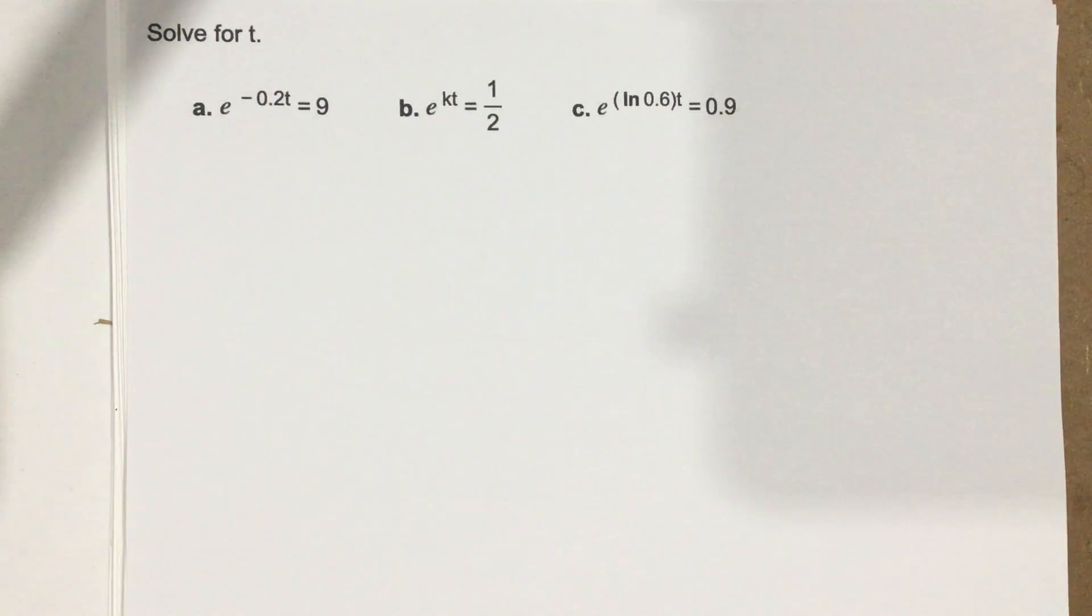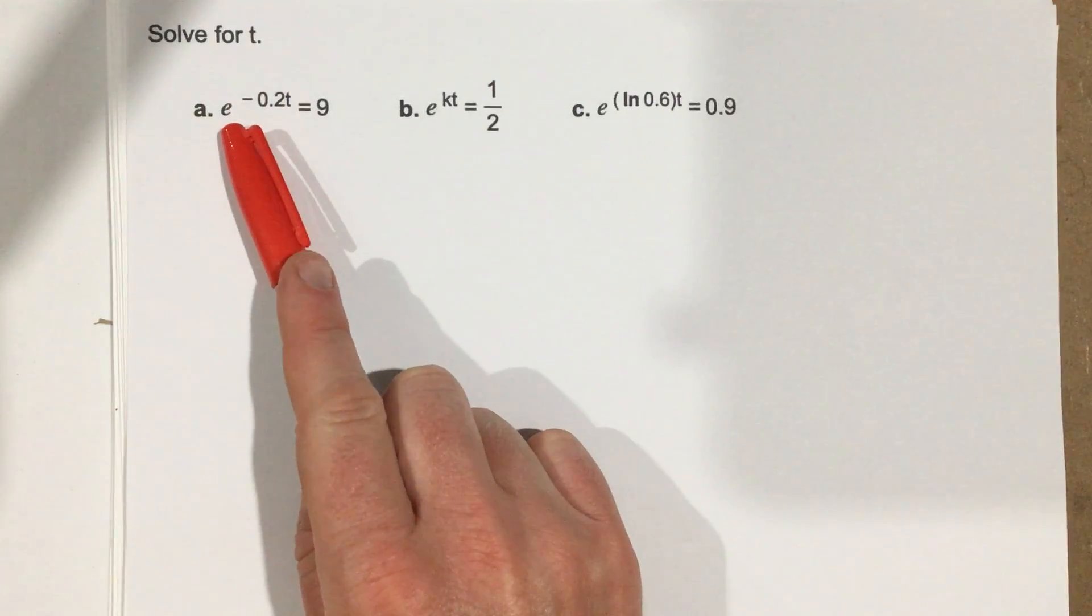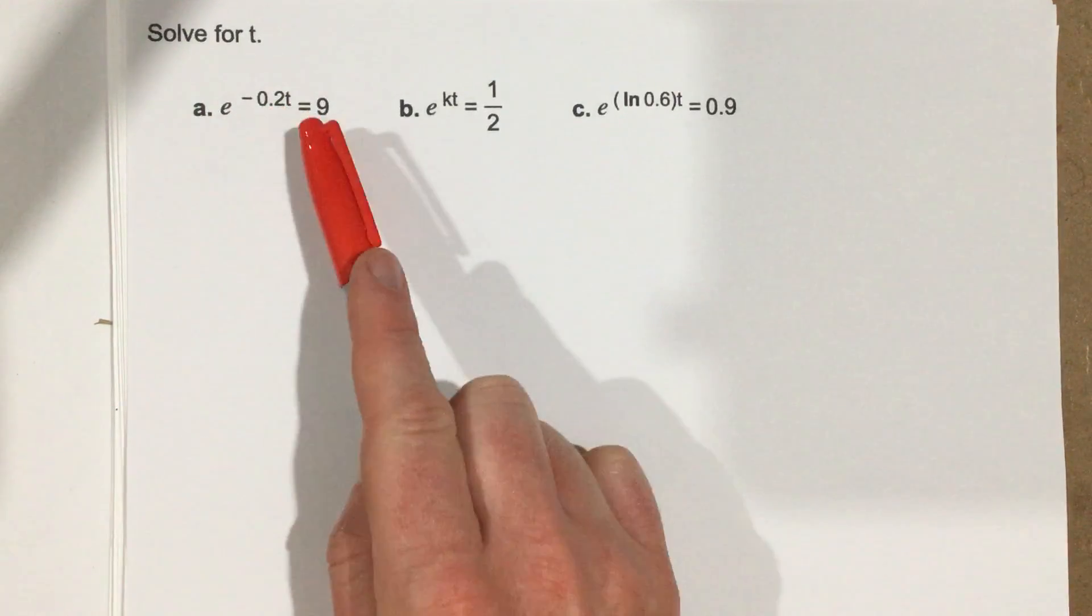This is problem number 8 from section 1.6. In this problem it says solve for t. We have e to the negative 0.2t equals 9.